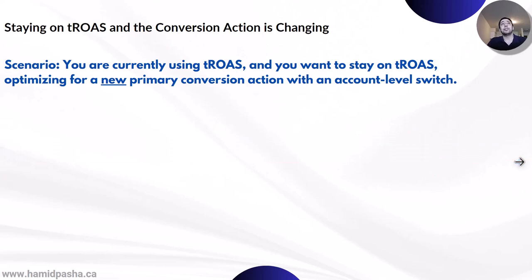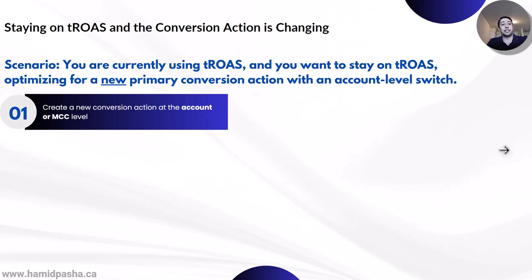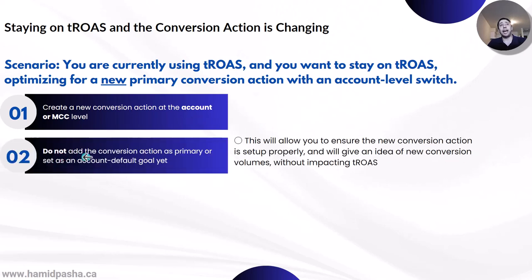Next scenario: now we are already on target ROAS, staying in tROAS, and the conversion action is changing. You are currently using tROAS and you want to stay in tROAS, optimizing for a new primary conversion action. So the only thing that changes here is the primary conversion action. First, create the new conversion action at the account or MCC level. Then, do not add the new conversion action as primary or set it as account level goal yet. This will allow you to make sure the new conversion action is set up properly and will give you an idea of new conversion volumes without impacting your current bid strategy of tROAS.